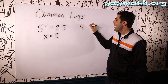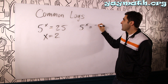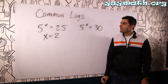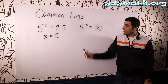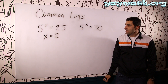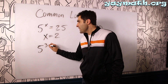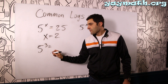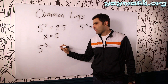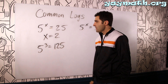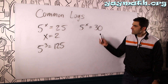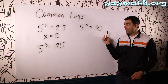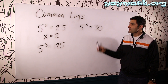But what if we had 5 to the x equals 30? 5 to what equals the number 30? Well, we can't really think of that number. It's definitely more than 2 and way less than 3, because 5 times 5 is 25, and 25 times 5 is 125. So it's somewhere between 2 and 3. What we need to do is introduce logs into this problem so that we can solve for x.